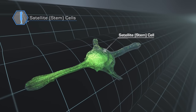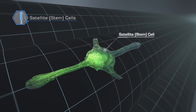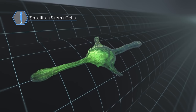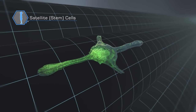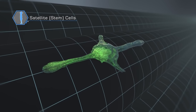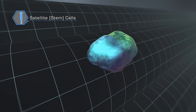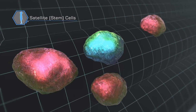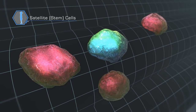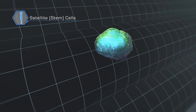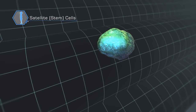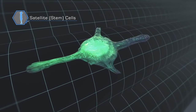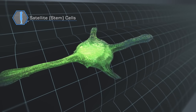Muscle stem cells are quiescent during homeostasis. Following a trauma event, the satellite cells activate, then divide to generate daughter myoblasts that differentiate and repair the damaged muscle fiber. A fraction of satellite cells will self-renew to maintain this stem cell pool.